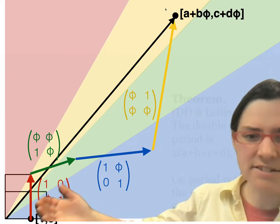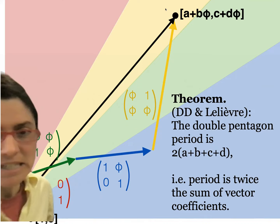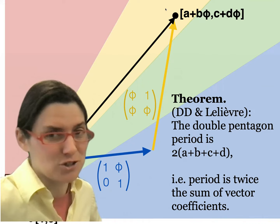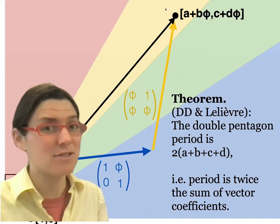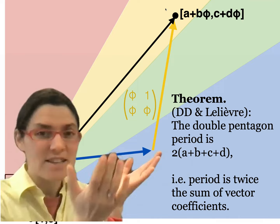What can we say? Get this — the answer to the burning question, almost. The period on the associated double pentagon surface for a trajectory in direction (A + Bφ, C + Dφ) is just 2(A + B + C + D) — twice the sum of the vector coefficients. That's like the most beautiful thing it could possibly have been. Because for rational numbers, with canonical vector (p, q), the period is 2(p + q). Here it's the same deal — twice the sum of the vector coefficients. Amazing. And there's really no guarantee it had to work out this way — why use φ as the basis rather than, say, integer multiples of √5? But it turned out this way, the nicest answer we could have gotten.